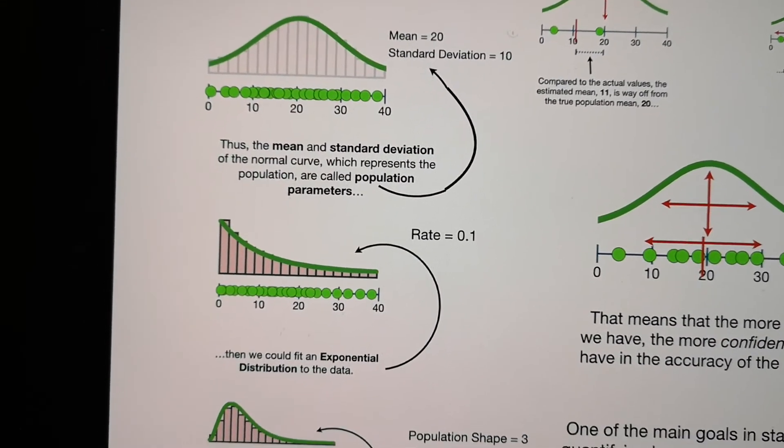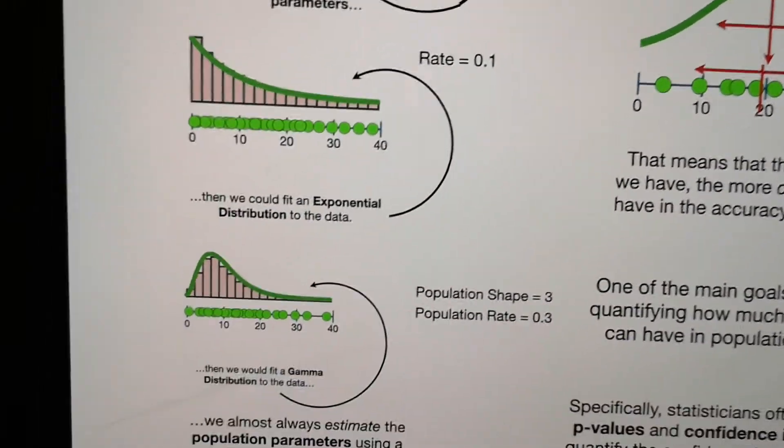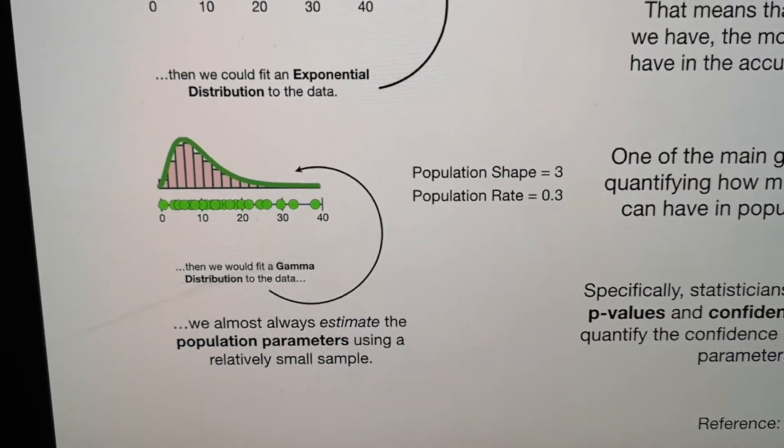So for population, those parameters to define it is called population parameters. The last one is a gamma distribution. You need the shape and the rate.